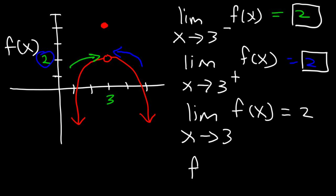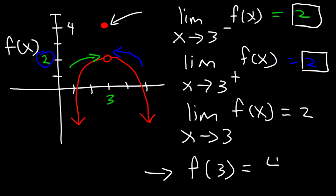What is the value of f of 3? When x is exactly 3, look for the closed circle. The closed circle has a y value of 4, so f of 3 is equal to 4.